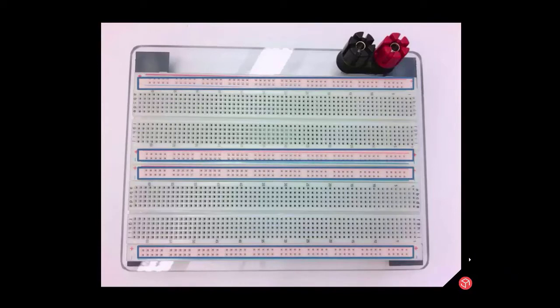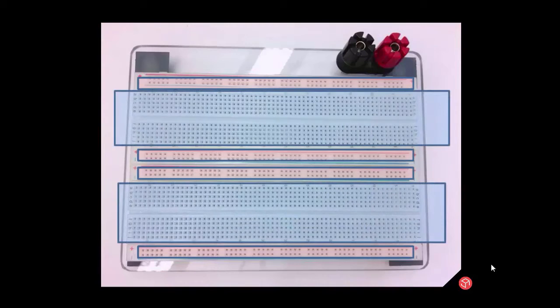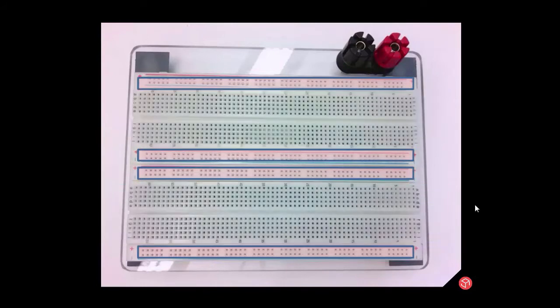Two at the edges and two in the middle. There are also four component sections: two here separated by a ravine, and another two here also separated by a ravine.